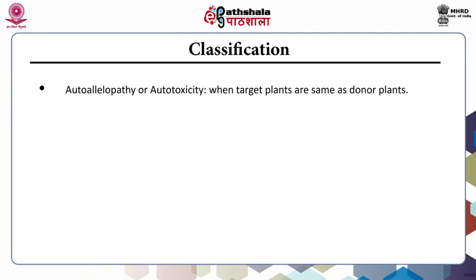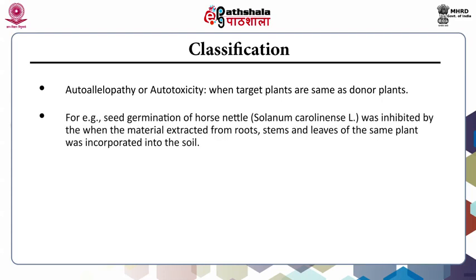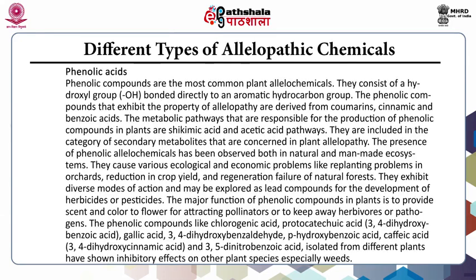Autoallelopathy or autotoxicity occurs when the target plants are similar to the donor plants. For example, the seed germination of horse nettle (scientific name: Solanum carolinense) was inhibited by the presence of material extracted from the roots, stems and leaves of the same plant when incorporated into the soil.